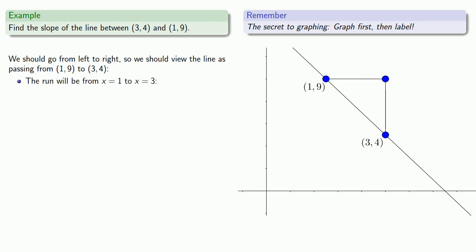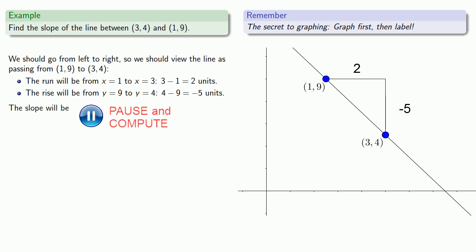The run: we go from x equals 1 to x equals 3, that's 3 minus 1, that's 2 units to the right. The rise: we go from y equals 9 to y equals 4, so our rise, end minus beginning, 4 minus 9, that's -5 units. The slope will be the ratio, rise over run, -5 over 2.